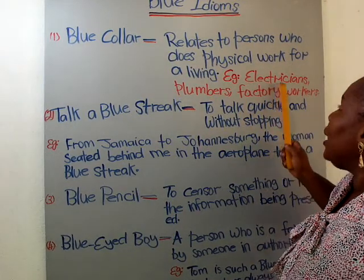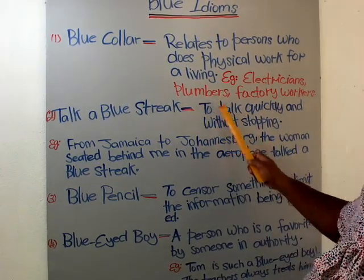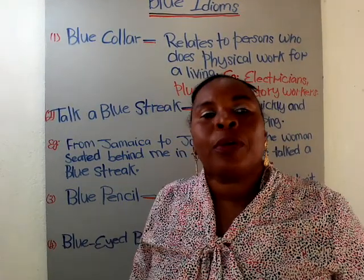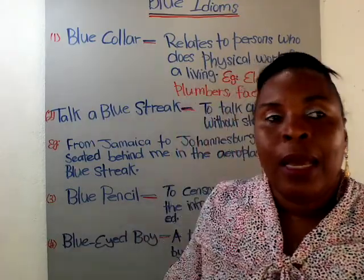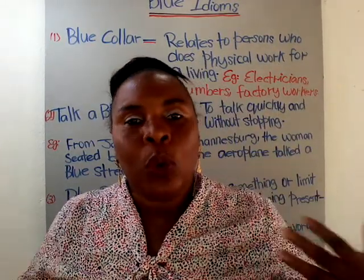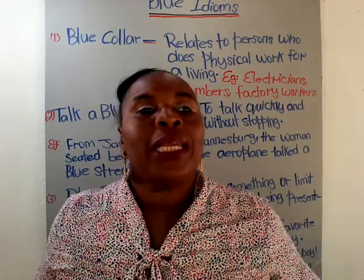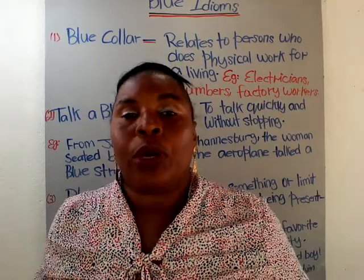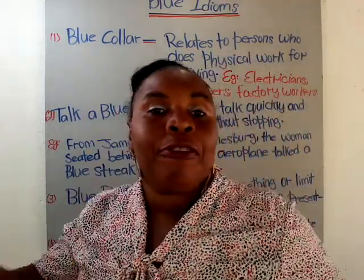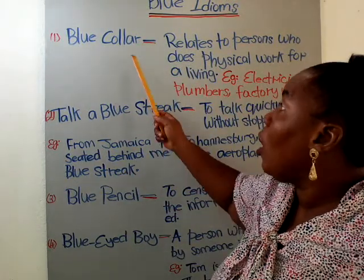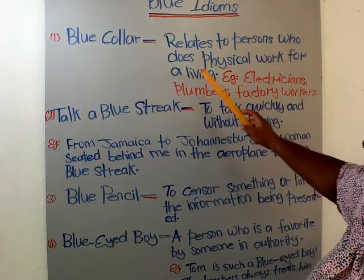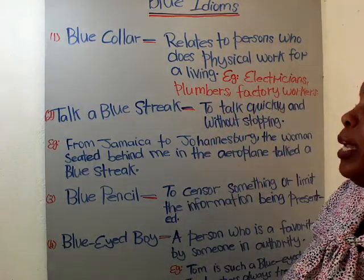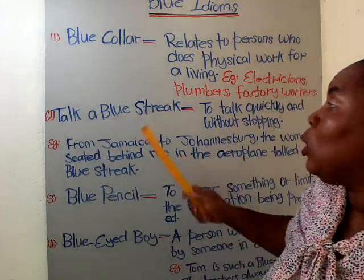Examples: electricians, plumbers, factory workers. Who else? An air dresser, a fashion designer, a sewer, a seamstress — people who cut the yard. These are skilled workers, or blue collar workers. They do their job depending on their physical ability. Blue collar relates to a person who does physical work for a living.